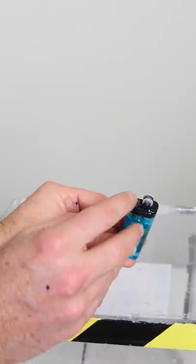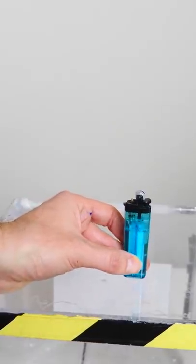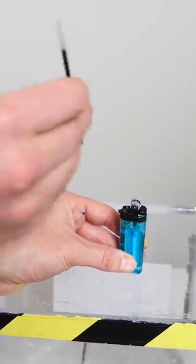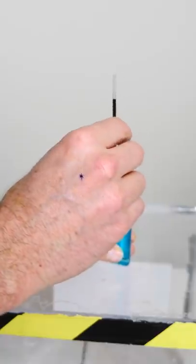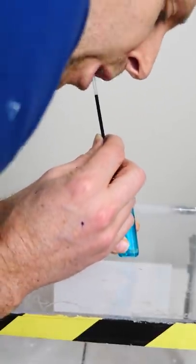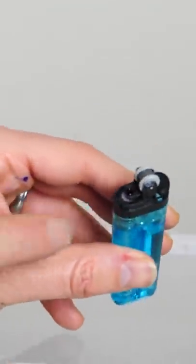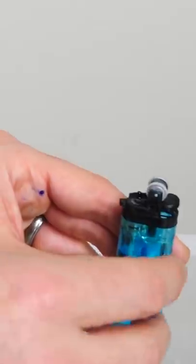You can see right here at the tip where the gas comes out. What I'm going to do is I'm just going to put some pen ink on there. And you can even blow some down into it. So now you can see on the tip, the tip is covered with pen ink.